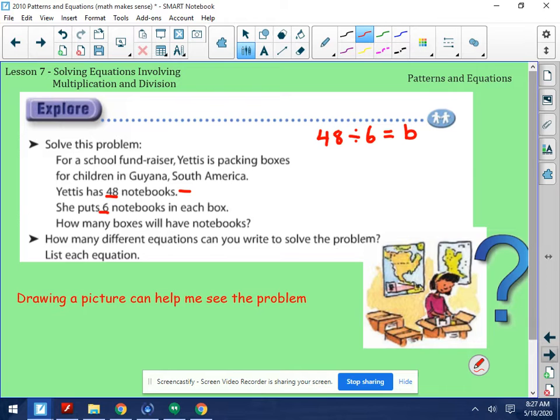That's one equation that we could say. We could also then say that the number of boxes multiplied by six books in each box would be a total of 48 books. So there's two different equations that we can write. However, both equations will get us to the same answer.